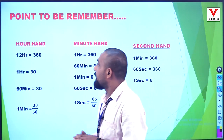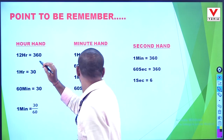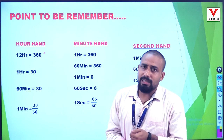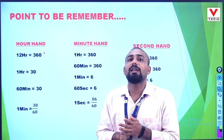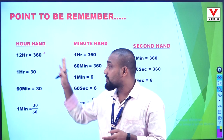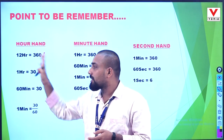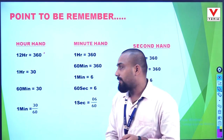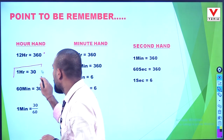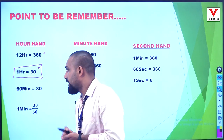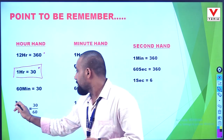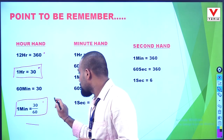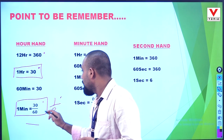For the hour hand, the key values to remember: 12 hours equals 360 degrees. So 1 hour equals 30 degrees — this is a very important point. And 1 minute, the hour hand covers 30 divided by 60, which equals half a degree. That is also an important point.